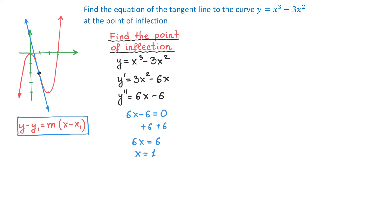To find the y-coordinate of the point of inflection, we take x equals 1 and substitute it into the original function. Then y equals 1 cubed minus 3 times 1 squared, which equals negative 2. So the coordinates of the point of inflection are (1, negative 2).